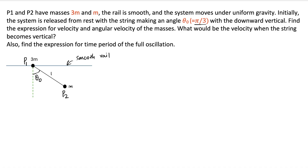We'll see along the way why this system will oscillate, and then we need to compute the time period for the full swing. These kinds of problems are best solved using the energy method. We can also solve using F equals ma, Newton's law. If the rail were not smooth, we would probably have to use F equals ma, but since it's a smooth rail, we can simply use the energy method. But before we do that, let's draw the free body diagram.